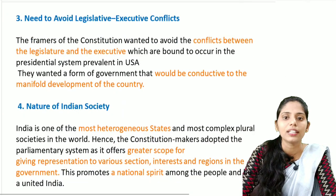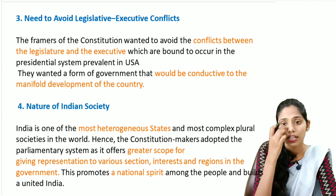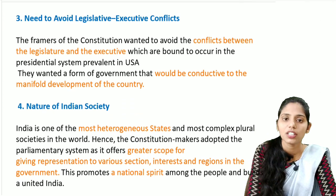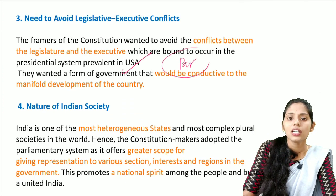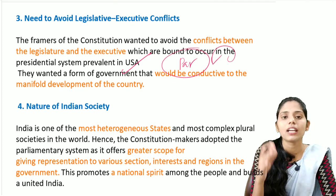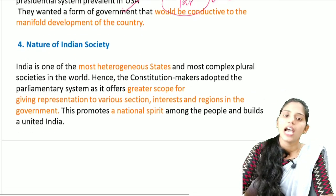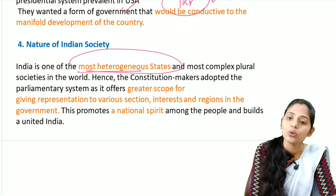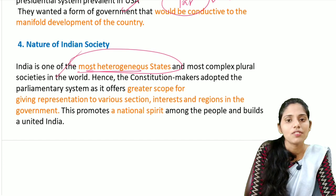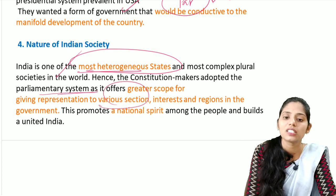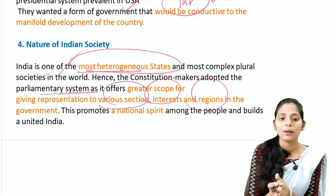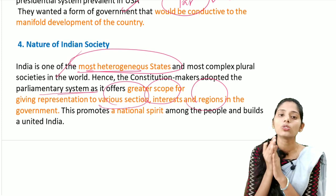The next reason is the need to avoid legislative and executive conflicts. The framers of the constitution wanted to avoid conflicts between the executive and legislature which are bound to occur in the presidential form. In the parliamentary system, executives come from the legislature, so there are decreased conflicts. The next reason is the nature of Indian society — India is one of the most heterogeneous states with complex and diverse societies. Therefore, our constitutional makers adopted this parliamentary system as it offers great scope for giving representation to various sections, interests, and regions in the government, promoting national spirit and building a united India.